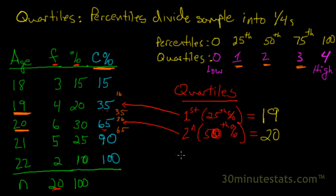And then finally, we could look for the third quartile, or the 75th percentile. If we start at the bottom, we go from 15% to 35% to 65%. Those are all below 75, the 75th percentile.